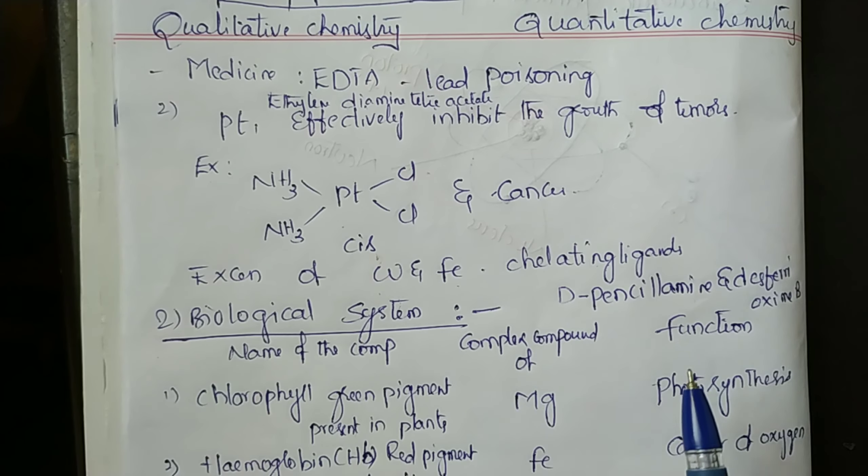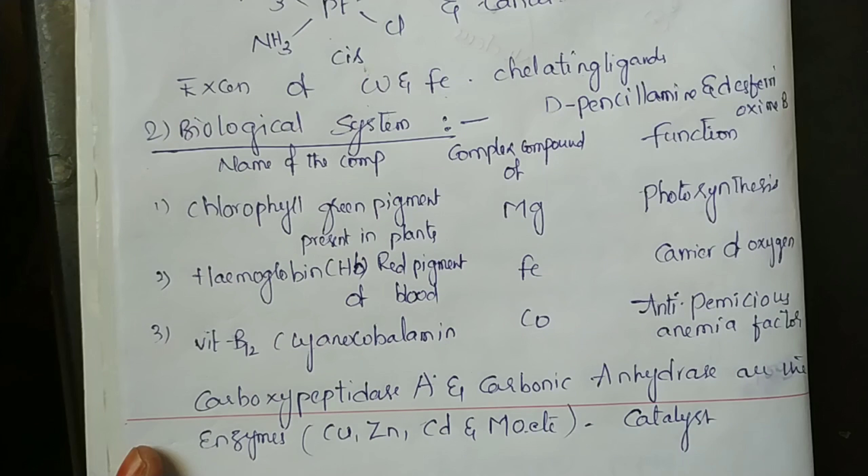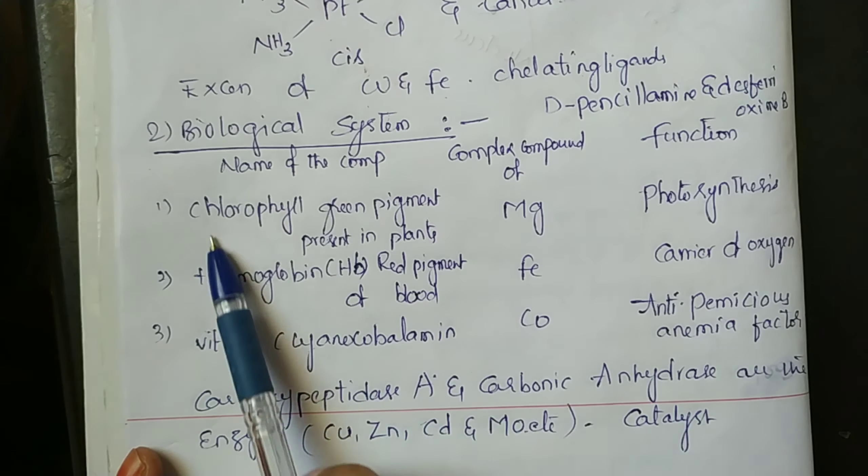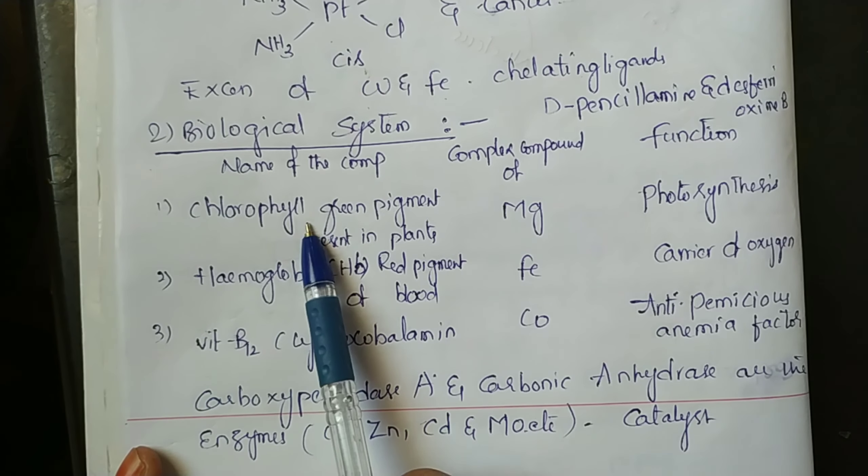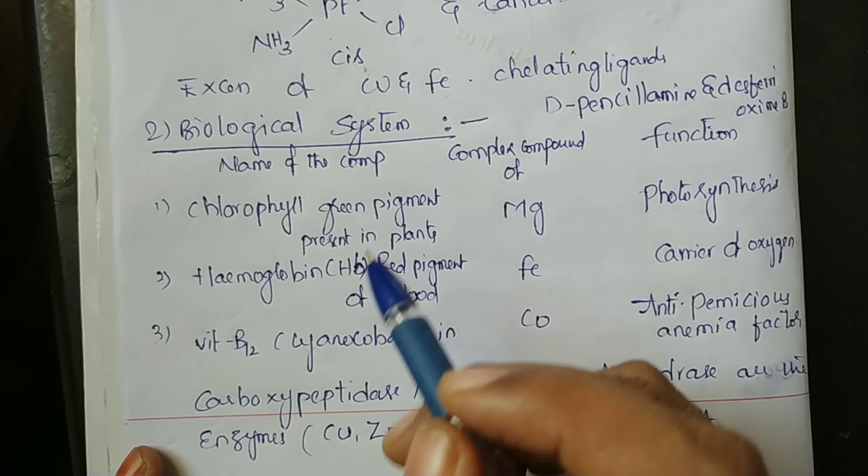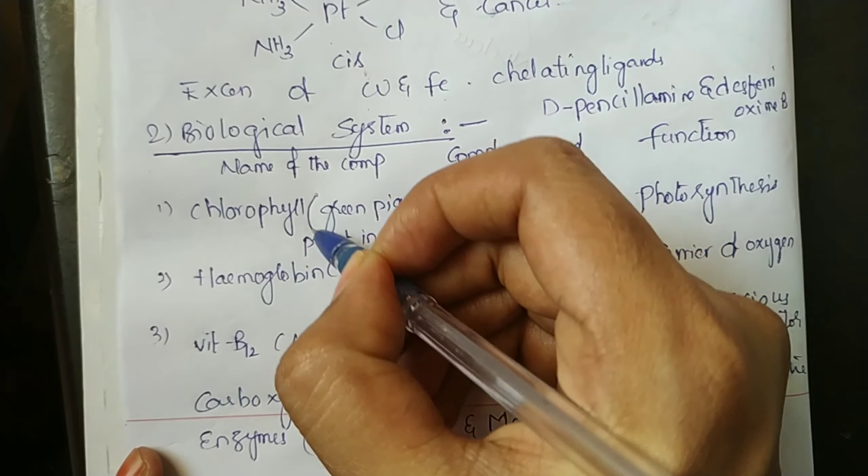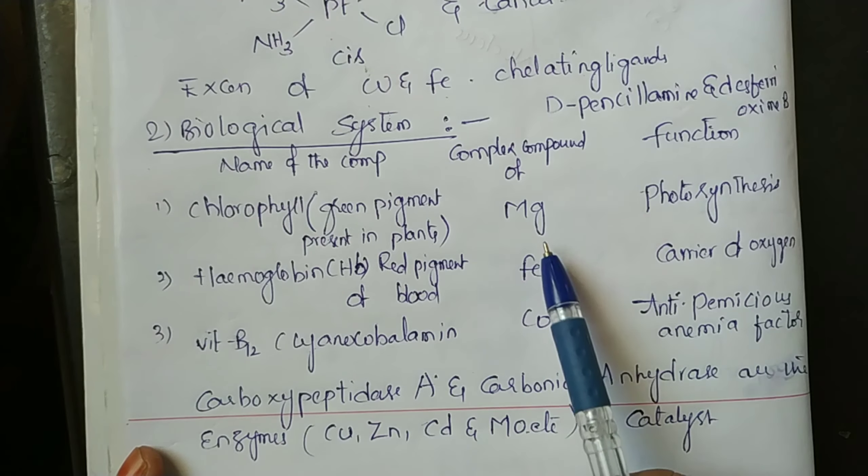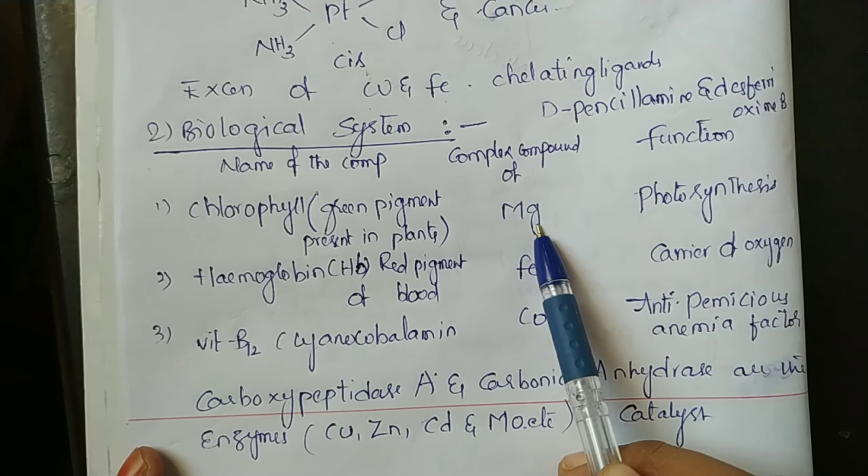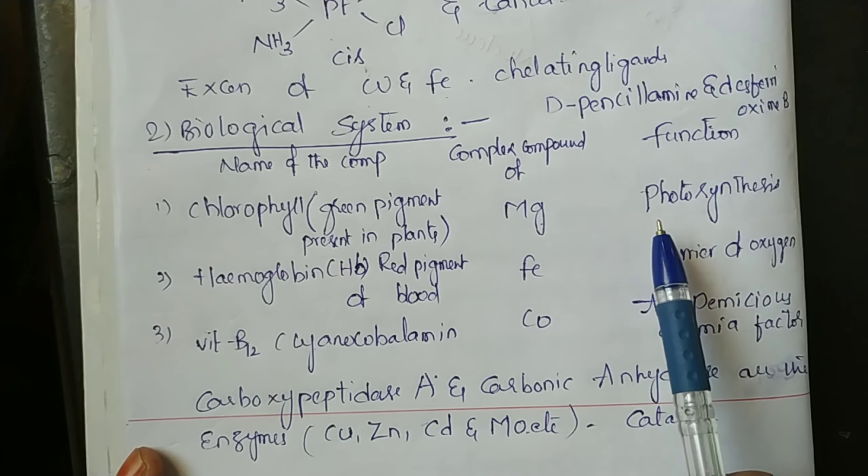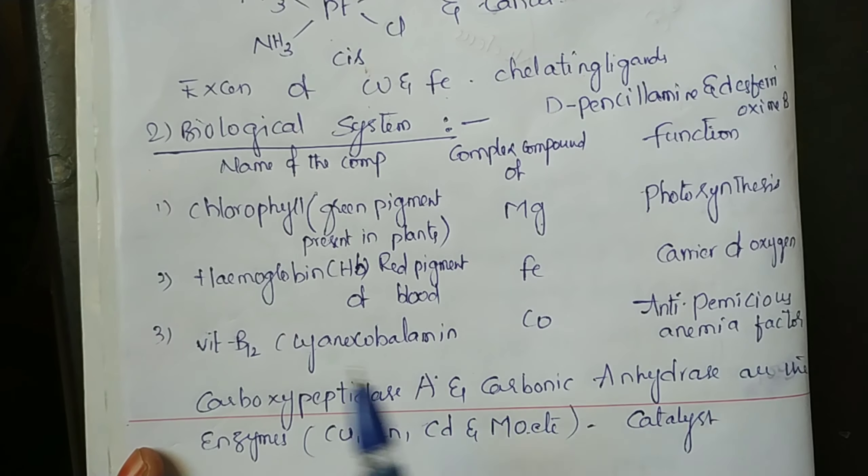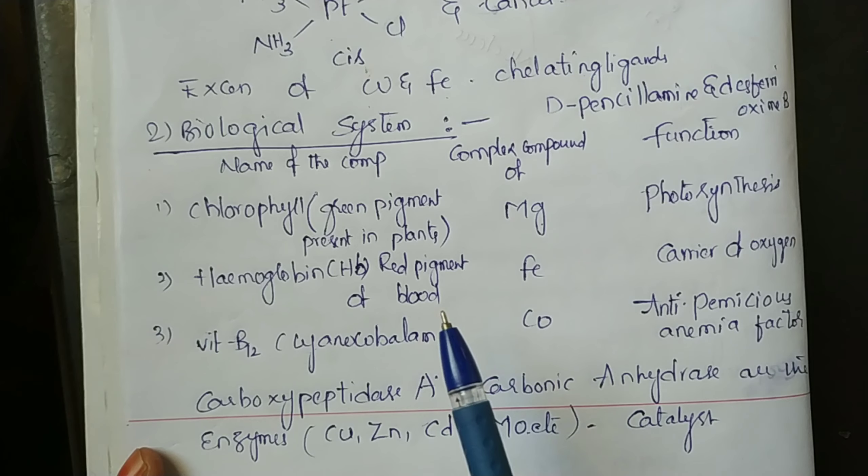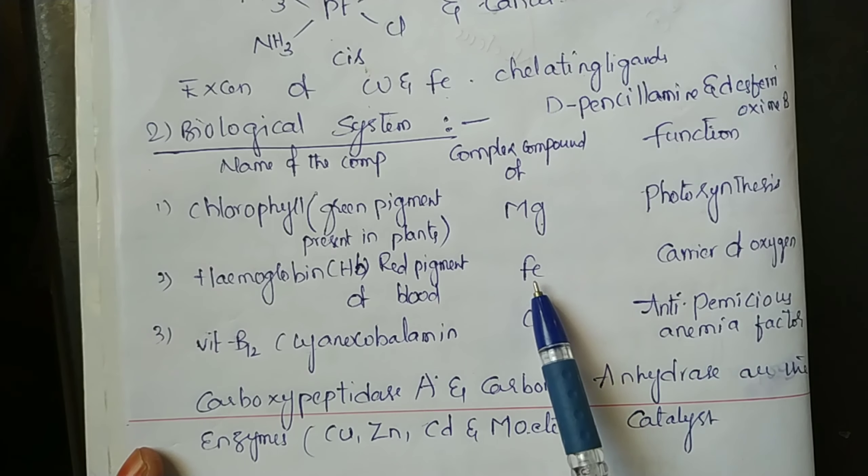In biological systems, chlorophyll is a green pigment present in plants, a complex compound of magnesium with the function of photosynthesis. Hemoglobin is a red pigment of blood, a complex compound of iron which carries oxygen.